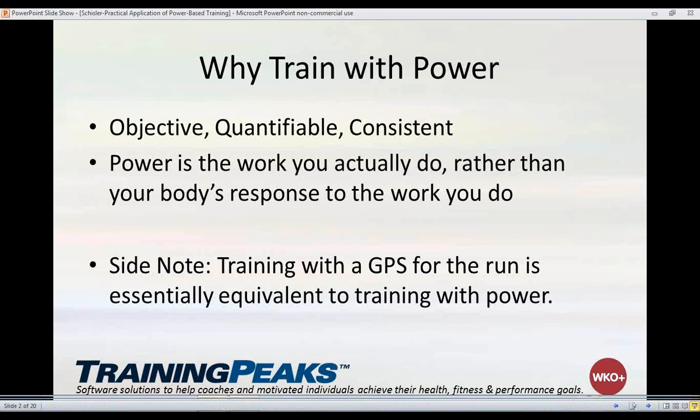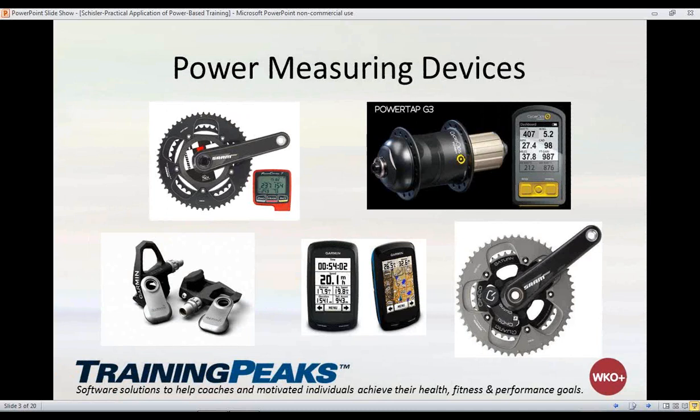Starting from the upper left going clockwise, we've got three of the most common power meters on the market, plus one hopefully soon to be on the market in the bottom left. The upper left is the SRM, a German-based power meter — the actual unit is in the center of the crank arm spindle, with strain gauges coming from right in the center of the bike. Moving to the right, we've got the PowerTap — the central unit of the rear hub, with strain gauges inside that hub measuring the power transferred from the crank arm through the chain back to the rear hub.